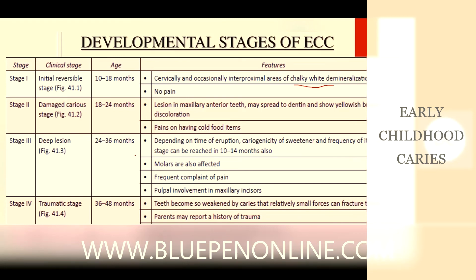Stage 3 is the depletion stage from 24 to 36 months. Depending on the time of eruption, cariogenicity of sweetener, and frequency of bottle use, this stage can be reached as early as 10 to 14 months. Molars will be included, frequent complaint of pain is noted, and pulpal involvement in maxillary incisors is seen. Stage 4 is the traumatic stage ranging from 36 to 48 months. Teeth become so weakened by caries that relatively small forces can fracture them, and parents may report a history of trauma. Molars are now associated with pulpal problems and maxillary incisors become non-vital.